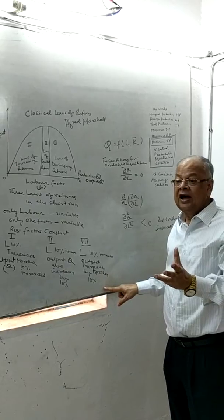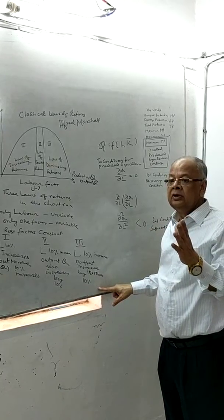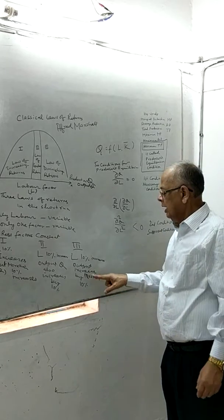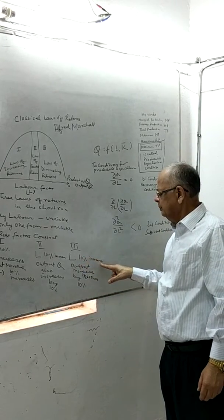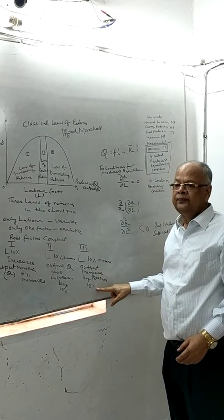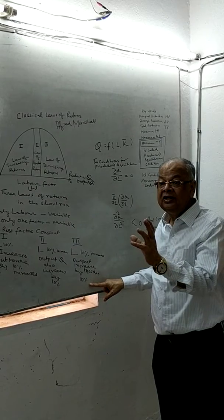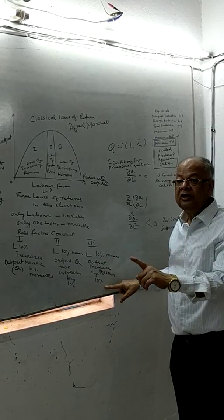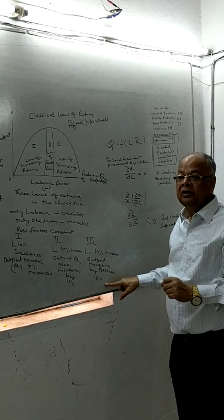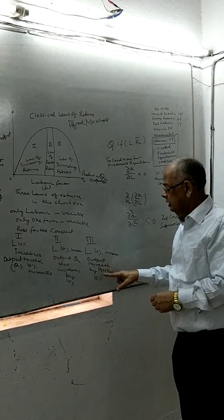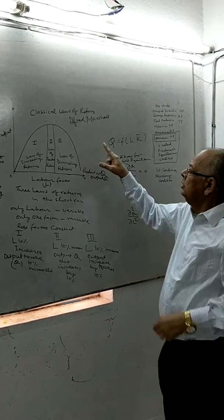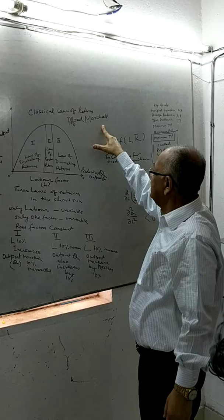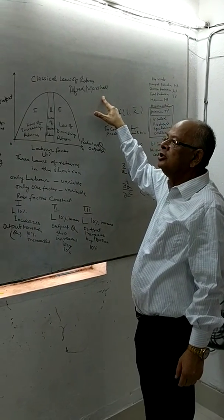In the third stage, labour increases by 10% but output increases by less than 10%, because all fixed factors are fully utilised at optimum. There is still an increase in production, but at a diminishing rate. This stage shows that diseconomies are increasing fast and are greater than economies, so the return is less than 10%. These are the three classical laws of returns Alfred Marshall established in 1890 in his book Principles of Economics.